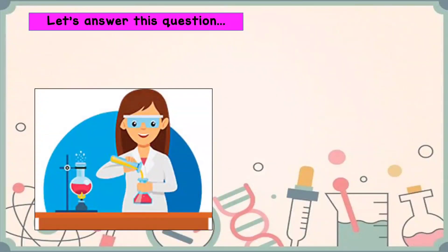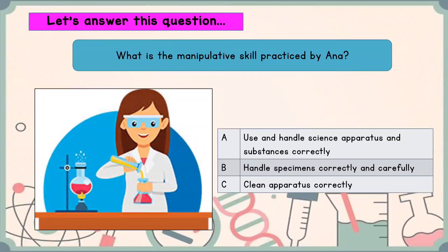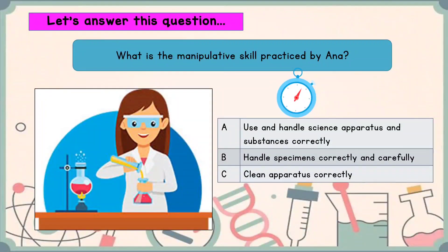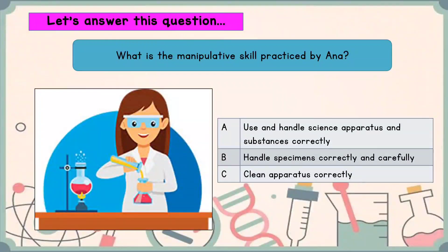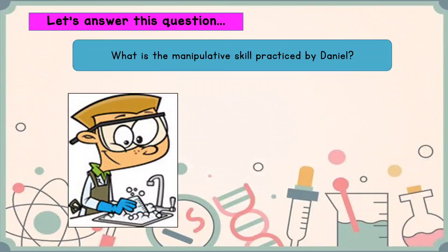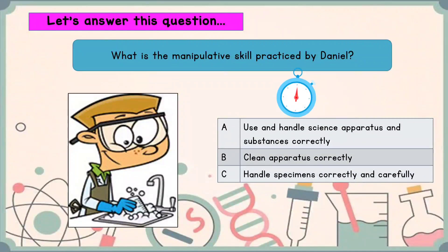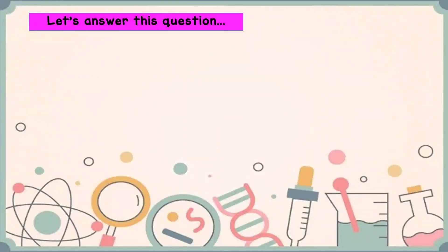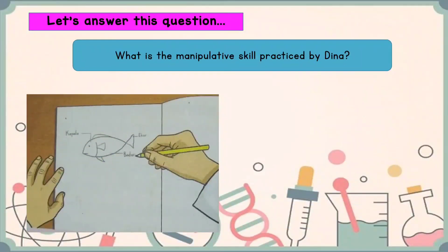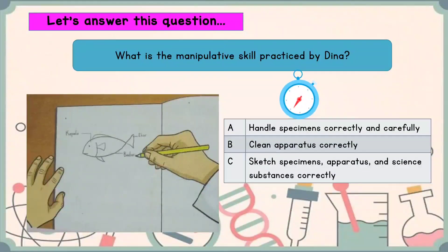Quiz time! Let's answer this question. What is the manipulative skill practiced by Ena? Yes, correct — the answer is A: Use and handle science apparatus and substances correctly. Next, what is the manipulative skill practiced by Daniel? Yes, the answer is B: Clean apparatus correctly. Next question — what is the manipulative skill practiced by Dina? Yes, the answer is C: Sketch specimens, apparatus, and science substances correctly.